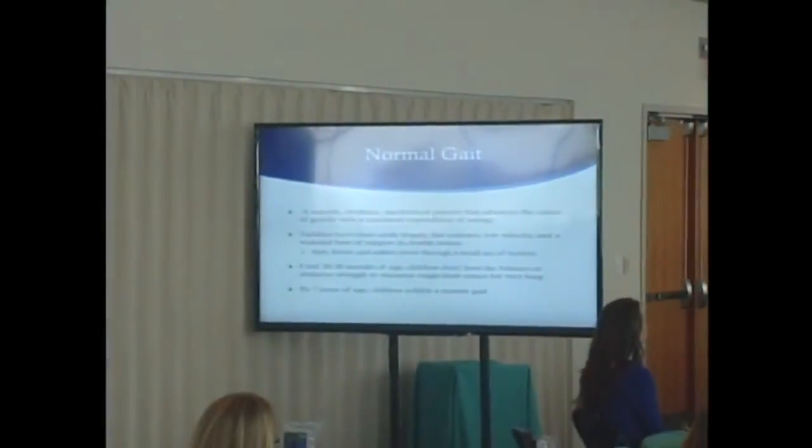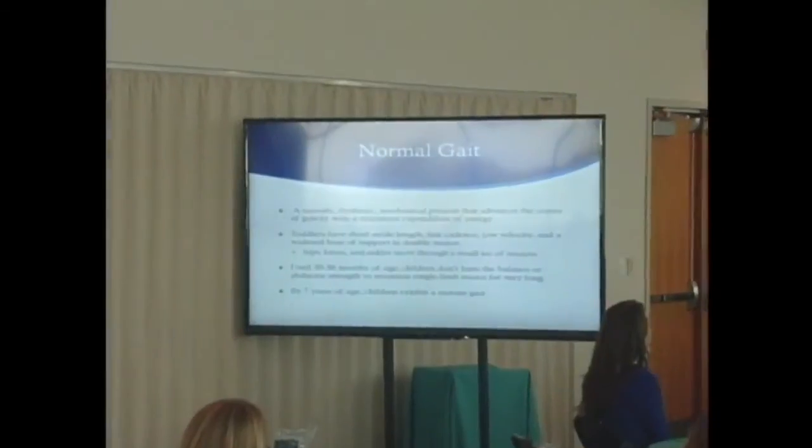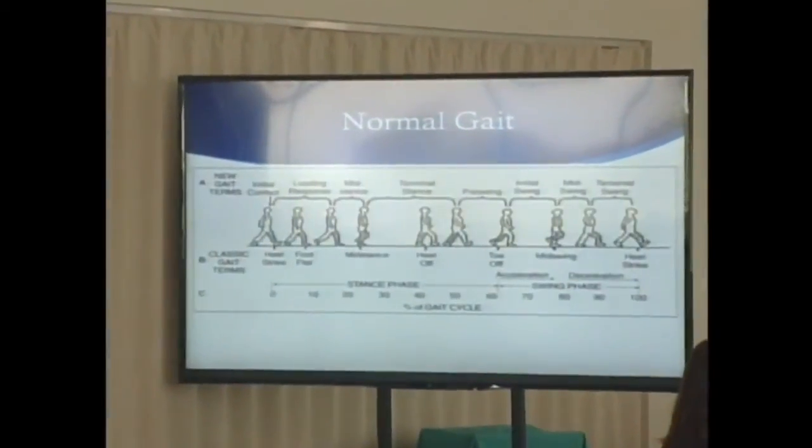Their knees, ankles, and hips don't have a large range of motion like ours would. By the age of about three, they don't have enough balance and strength in their abductors to maintain a single limb stance for very long. By age seven, we think they have a pretty mature or adult-type gait.